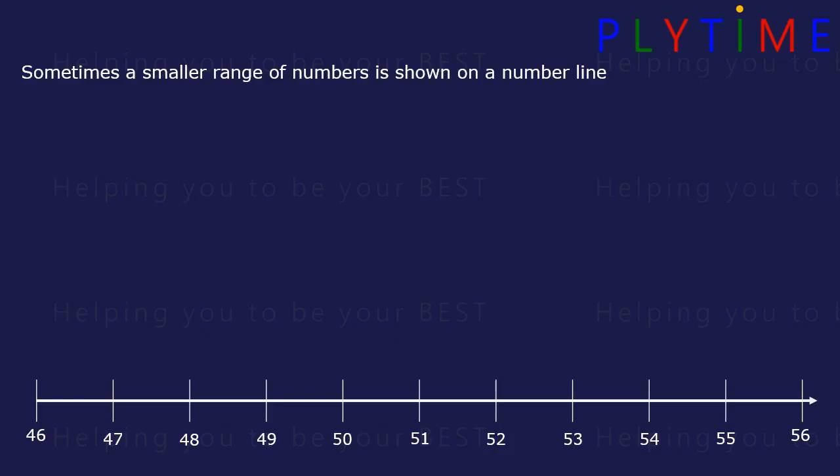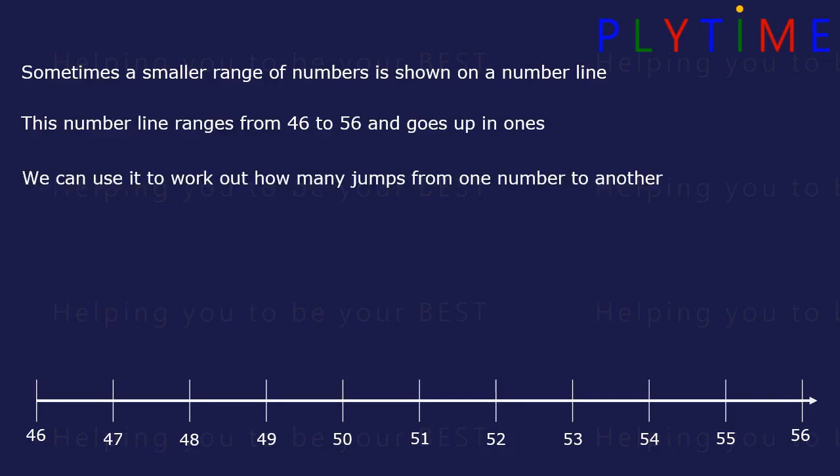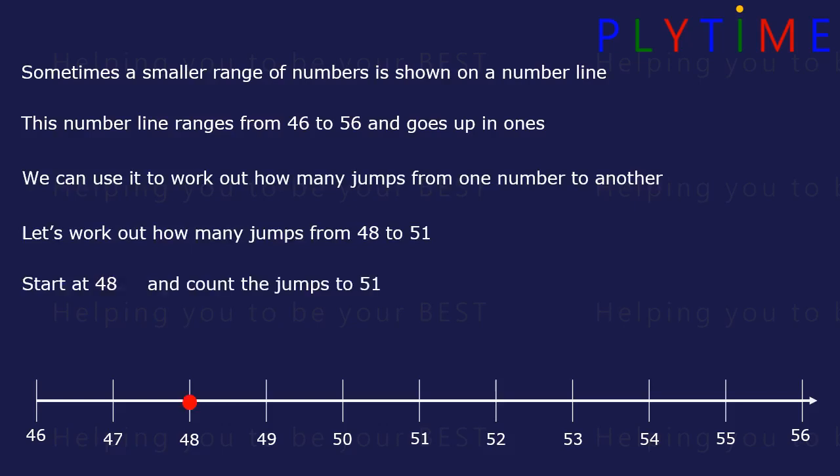Sometimes a small range of numbers is shown on the number line. Here the numbers go from 46 to 56 and go up in ones. We can use it to work out how many jumps from one number to another. How many jumps from 48 to 51? Let's start at 48 and count the jumps to 51.